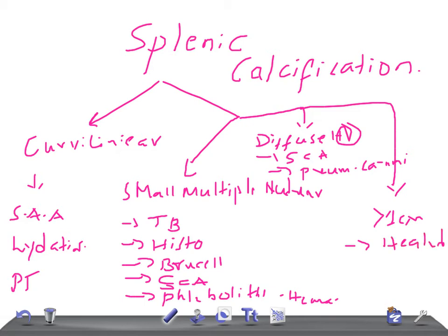It could also be a healed abscess or tuberculosis. So these are the causes for splenic calcification: curvilinear, multiple small nodular, diffuse homogeneous or granular, and solitary greater than one centimeter. Thank you so much for watching, take care.